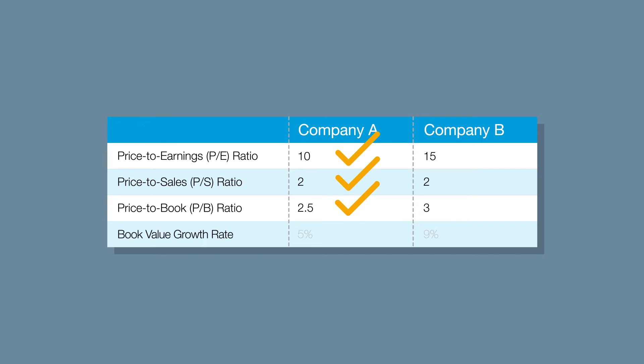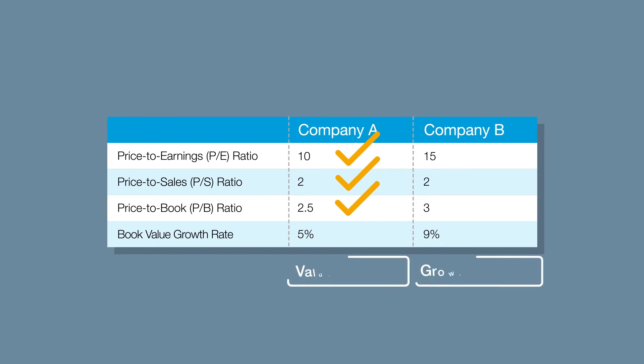Finally, let's look at book value growth, which can give an investor an idea of how quickly a company is building its assets. Notice how the book value growth rate for Company B is higher than Company A. One possible explanation is that Company B has been in a more growth-oriented phase as a business. It also provides an explanation for why its valuation multiples are less attractive, which is a common characteristic of a growth stock. Company A, however, has more features that could attract a value investor. As you can see, you can learn a lot about companies just by comparing a few of their financial ratios. This can be a valuable skill to learn as you begin searching for your own investment candidates.